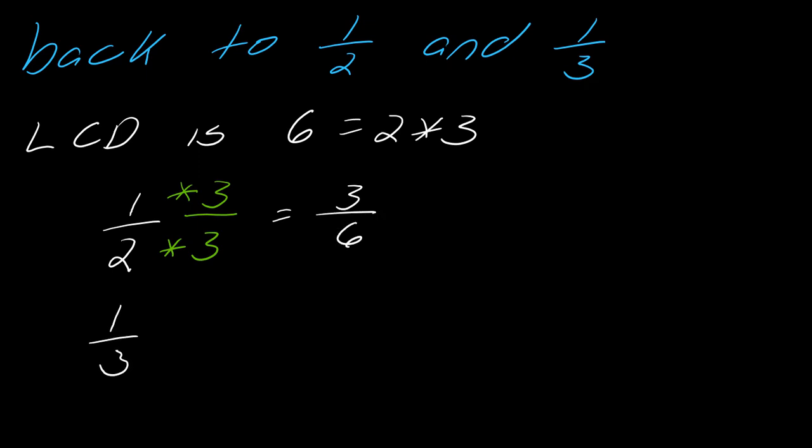I can do the same thing with one third. What do I have to multiply 3 by to get to 6? I have to multiply it by 2. 3 times 2 is 6. Whatever I do to the bottom, I have to do to the top. This becomes 2 over 6. From here, now I can do whatever operation I want with them in terms of addition or subtraction.